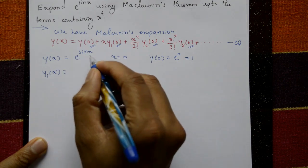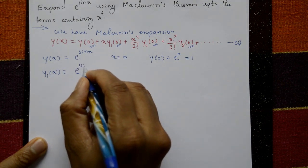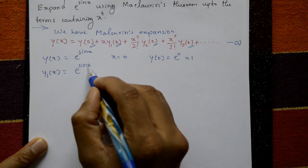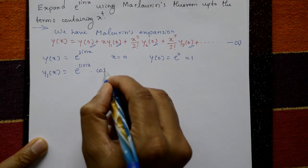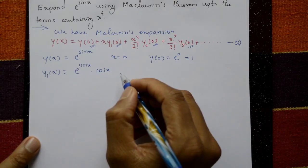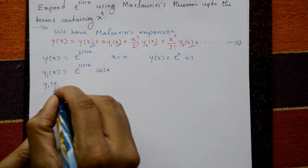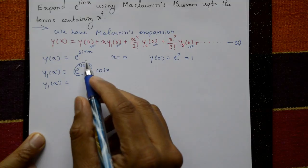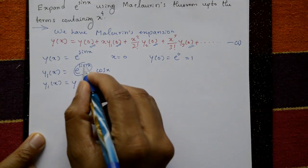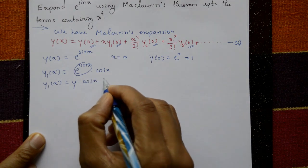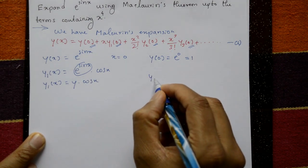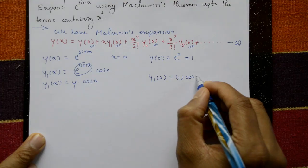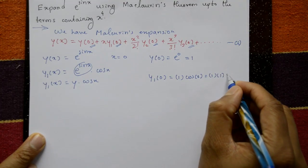Next, differentiate to find y1(x). Differentiating e raised to sin x: the derivative of e^(sin x) is e^(sin x) times cos x, so y1(x) = y · cos x. Put x = 0: y1(0) = y(0) · cos 0 = 1 × 1 = 1.